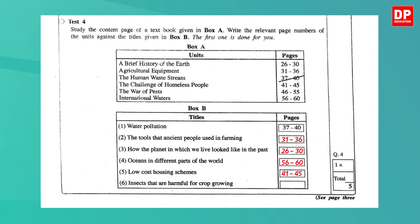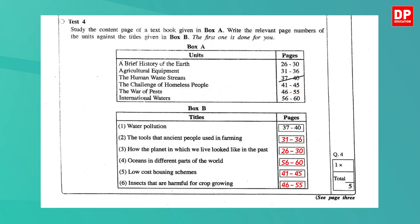The last one: Insects that are harmful for crop growing. The insects that are harmful for crop growing are called pests. So the unit is The War of Pests. The page numbers are 46 to 55. I hope you could do it correctly.